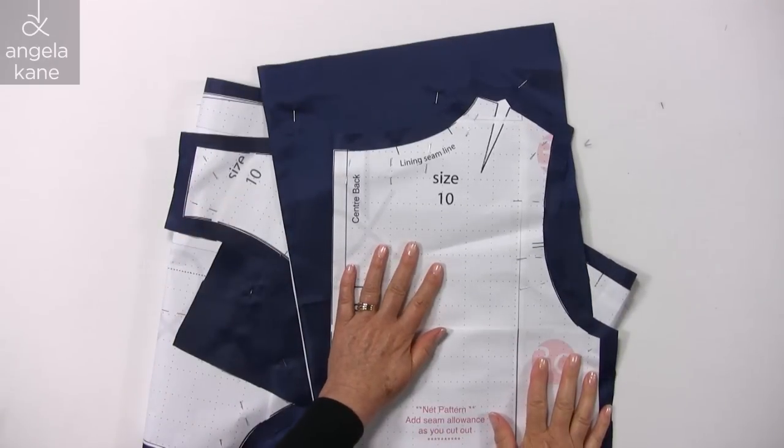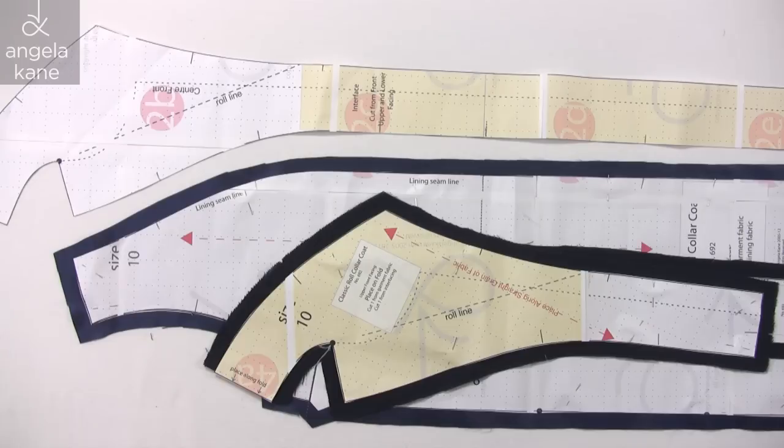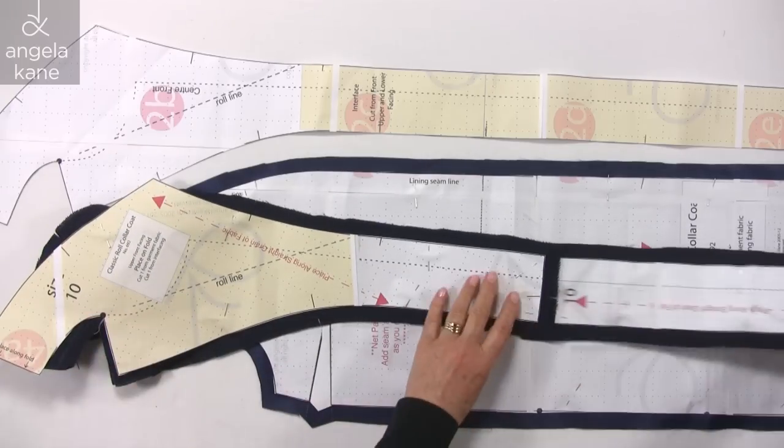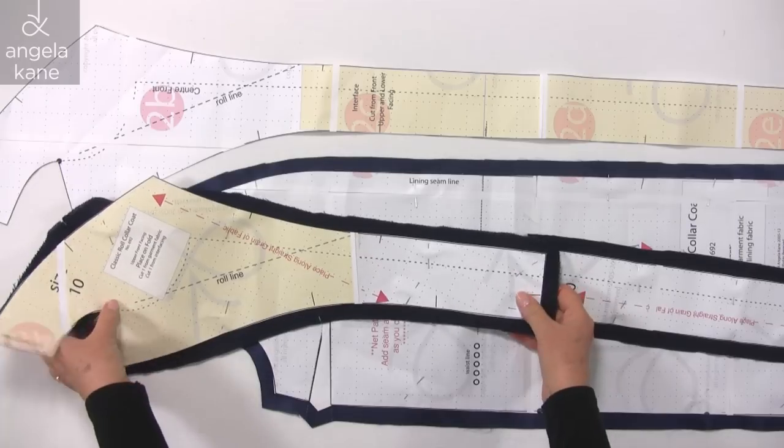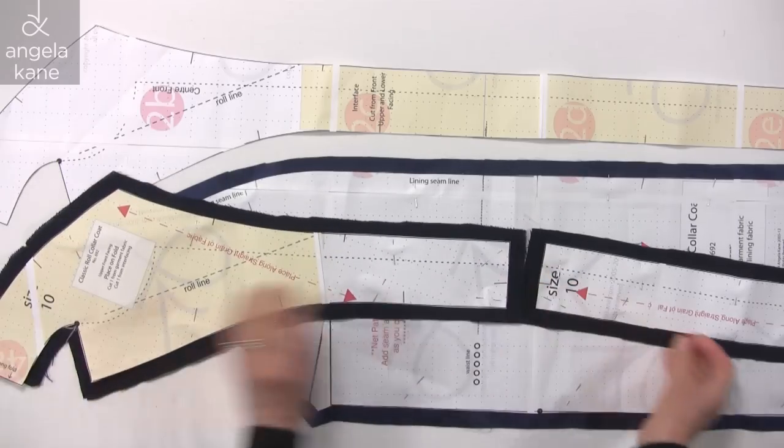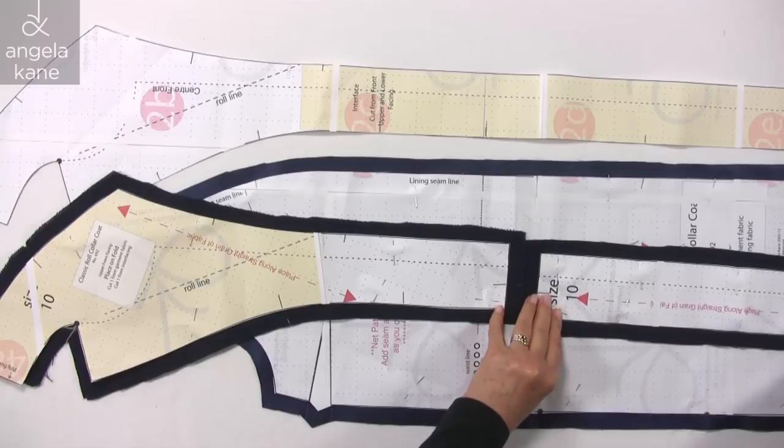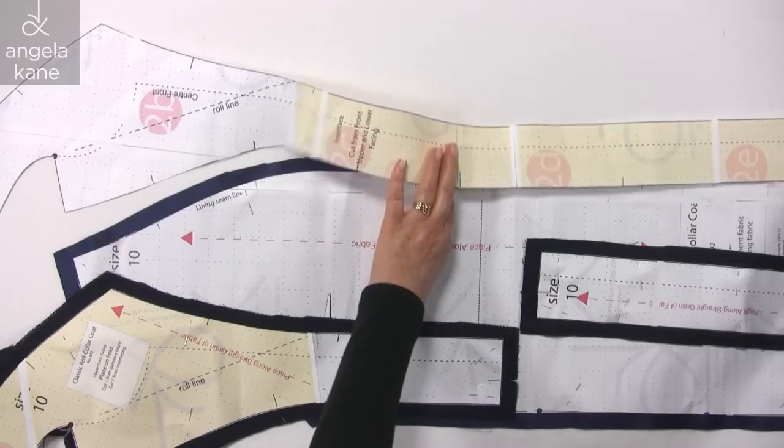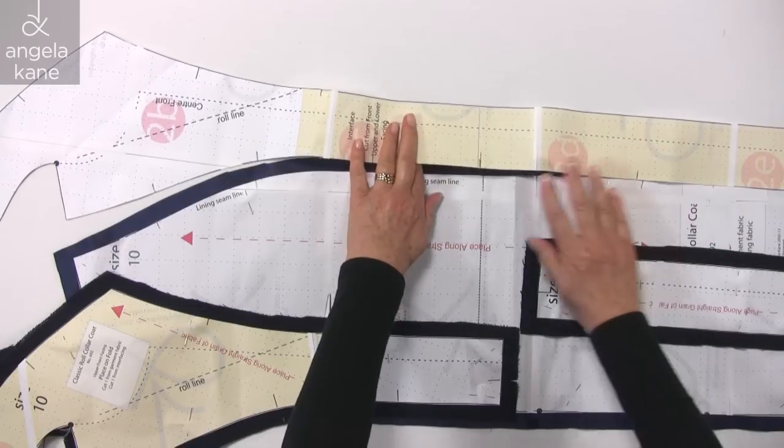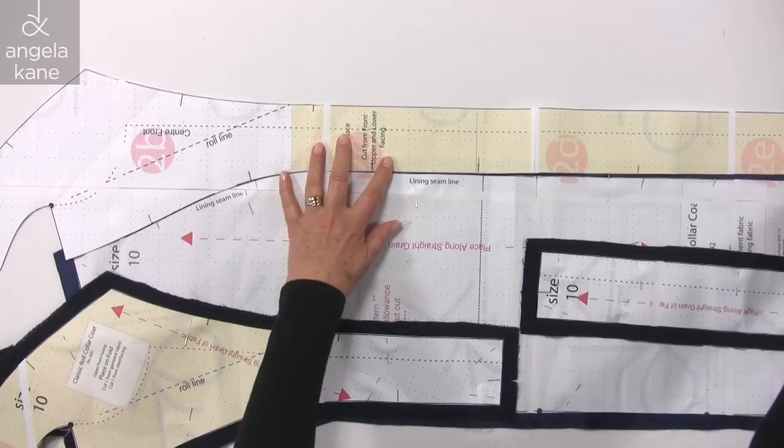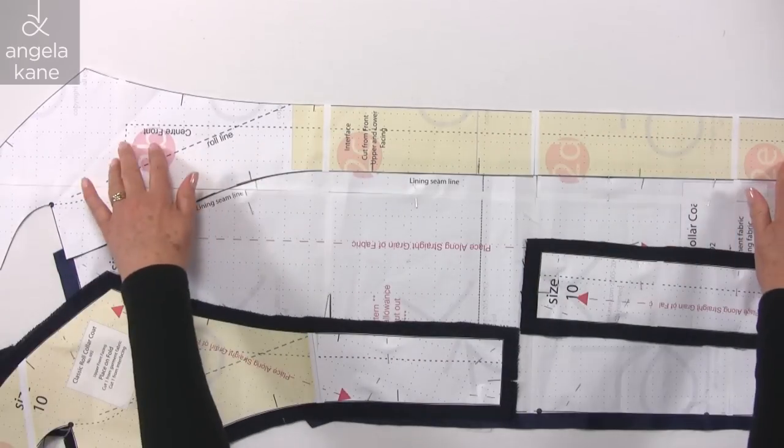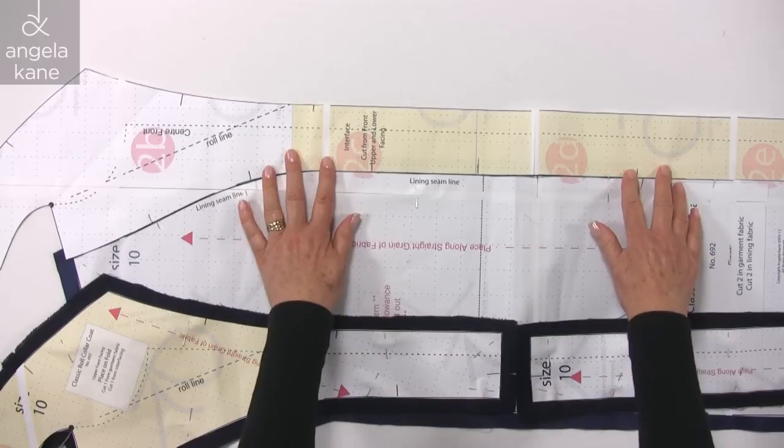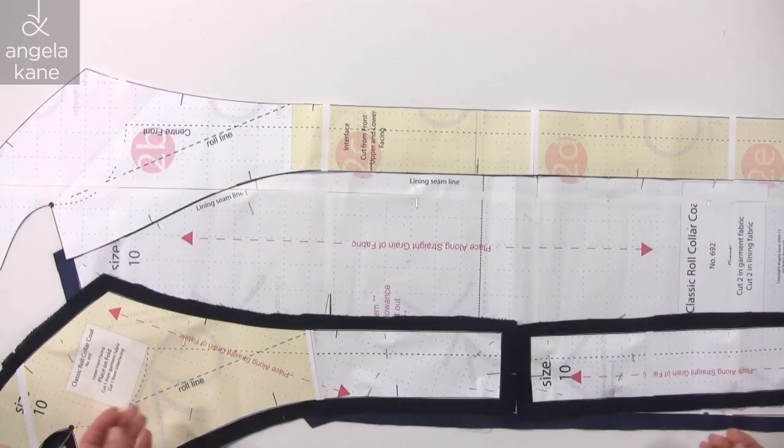Now for the interfacing. This is our facing that we cut from our garment fabric. It's cut in two sections to allow the top half to be placed at an angle so that the center back neck is on the fold. The join comes at waist level. This is the piece we cut away from the coat front in order to cut the lining. So these two are exactly the same and you can use either for the interfacing.